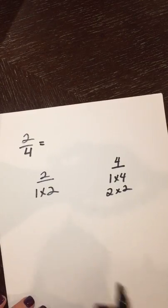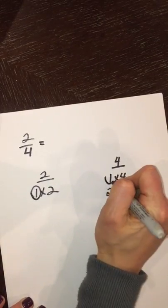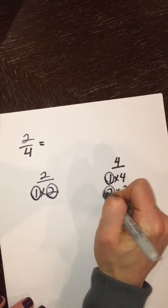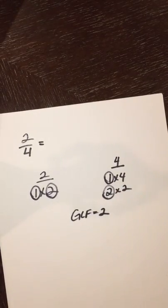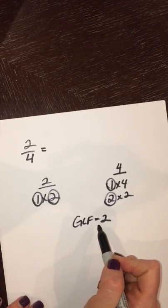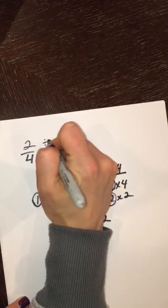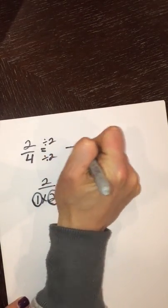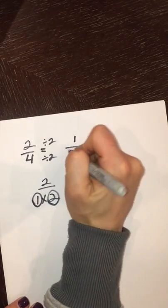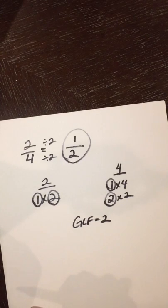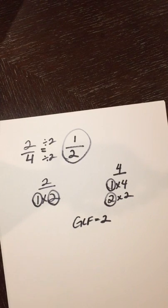So now I'm going to find the greatest common factor by circling the ones that they have in common, and I know that the greatest common factor is two. So that means I'm going to take that greatest common factor, and I'm going to divide both the two and the four by two. When I do that, I get one-half. So one-half is two-fourths in simplest terms, or simplest form.